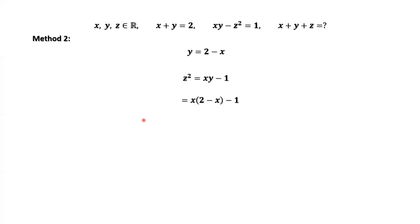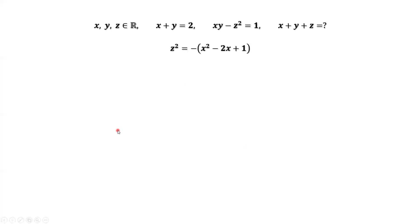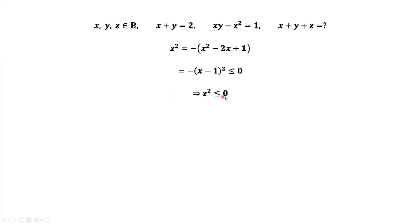This implies z squared equals x times (2 minus x) minus 1. Simplifying the right-hand side, we get negative x squared plus 2x minus 1, which equals negative (x minus 1) squared. A negative of something squared is always less than or equal to zero, so z squared is less than or equal to zero.